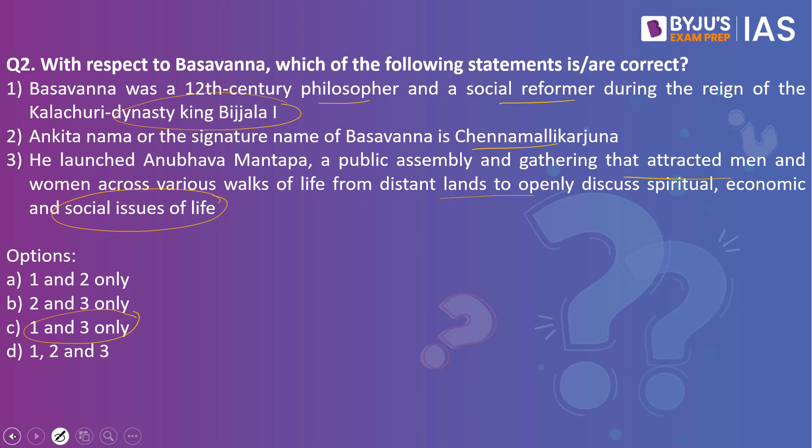When you look at the second statement — the Ankita Nama or signature name of Basavanna is Chenna Mallikarjuna — this is a wrong statement. Basavanna's signature name is not Chenna Mallikarjuna; it is Kudala Sangamadeva. Chenna Mallikarjuna happens to be the signature name of Akka Mahadevi. So the second statement is wrong.